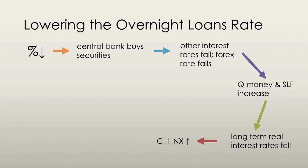The fall in the exchange rate induces an increase in net exports because domestic goods are now cheaper to foreign buyers. An increase in consumption, investment, and net exports causes aggregate demand to increase. The result is an increase in real GDP and inflationary pressure.